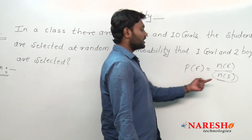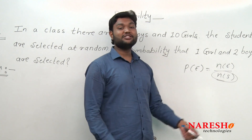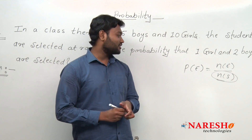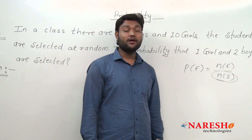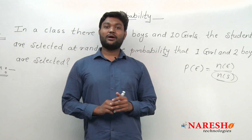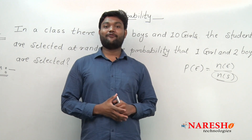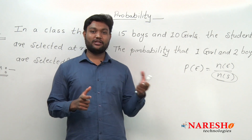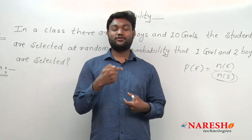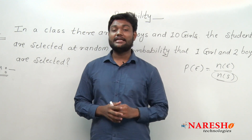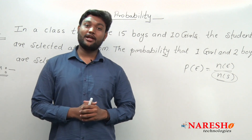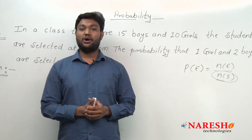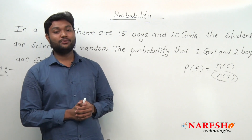Here, number of sample space means total number of events, and number of event means the actual situation we want inside the question of probability. As you people are going to apply for the CRT examination for a company, at the first round, they are not going to ask you basic questions like what is probability when a coin is tossed. Probability is a chapter which depends on permutation and combination. Probability is the application of permutation and combination where the concept of combination is going to be used most.